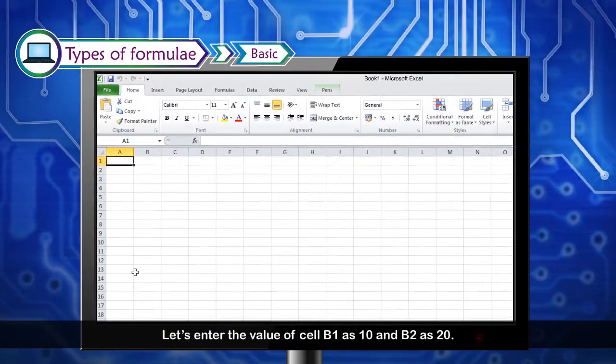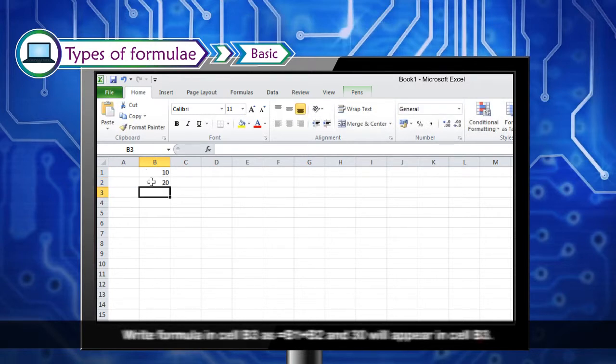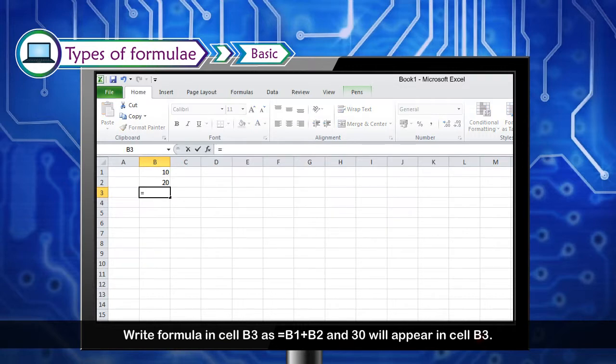Let's enter the value of cell B1 as 10 and B2 as 20. Write formula in cell B3 as equals B1 plus B2, and 30 will appear in cell B3.